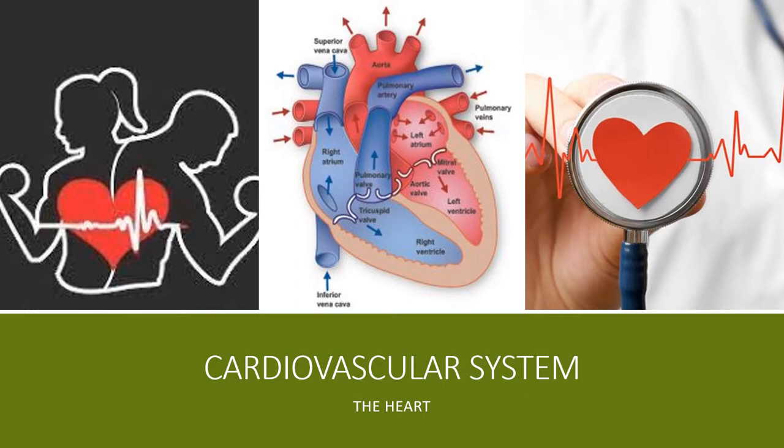separated by the valves, the interventricular valves. On the right is the tricuspid — it has three cusps. I always remember 'tri.' When you do a rugby touchdown, we call it a try, and right is tri — that's how I remember it. And on the left side is the bicuspid valve, otherwise known as the mitral valve. We'll go through all this anatomy later.